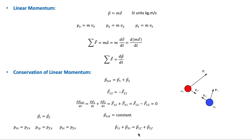This means that the total initial linear momentum equals the final momentum. The linear momentum of each particle may change, but the total linear momentum of the system is the same at all times. This statement is known as the law of conservation of linear momentum: if the net external force acting on a system is zero, the total linear momentum remains unchanged. These internal forces do not affect the total, and the net external force on the system is zero.